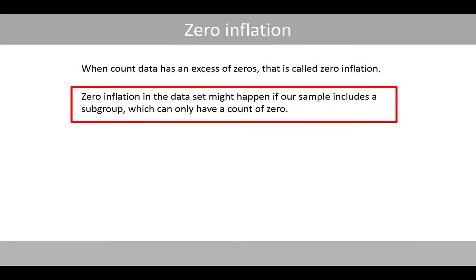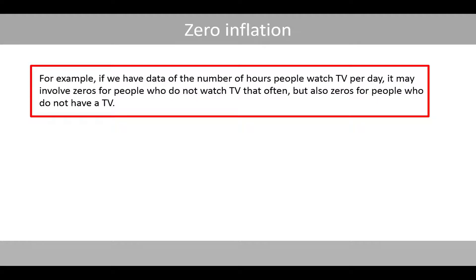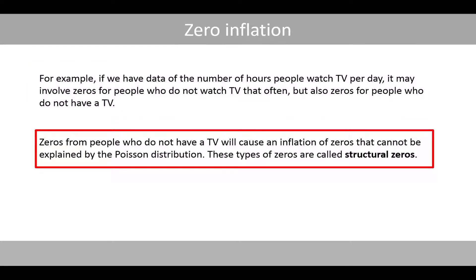Zero inflation in a dataset might happen if our sample includes a subgroup which can only have a count of zero. For example, if we have data on the number of hours people watch TV per day, it may involve zeros for people who do not watch TV that often, but also zeros for people who do not have a TV. Zeros from people who do not have a TV will cause an inflation of zeros that cannot be explained by the Poisson distribution. These types of zeros are called structural zeros.